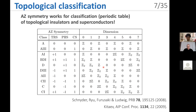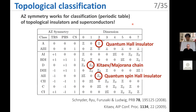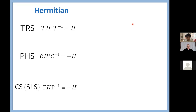The Altland-Zirnbauer symmetry is crucial for topological classification of insulators and superconductors. We have this tenfold periodic table that classifies topological phases according to spatial dimensions and symmetry. Many famous topological systems such as the quantum Hall effect are collectively classified in this periodic table. This classification table based on symmetry is the most fundamental theoretical framework of Hermitian topological insulators and superconductors. For Hermitian systems, time-reversal symmetry, particle-hole symmetry, and chiral symmetry are the most fundamental symmetries.